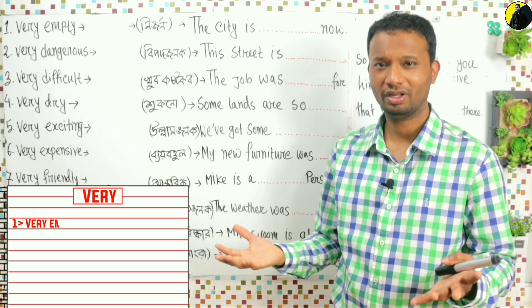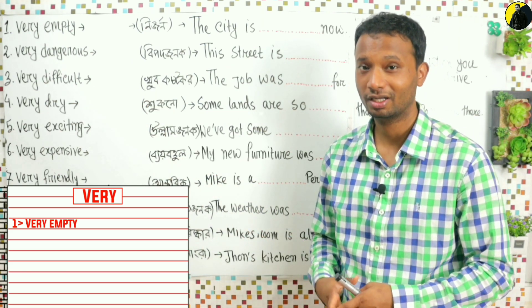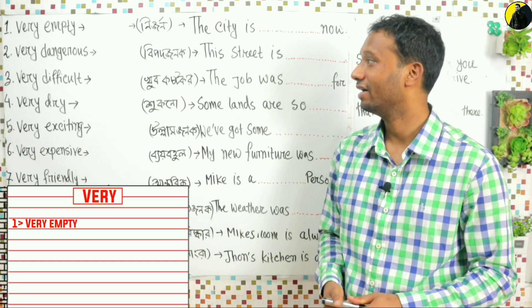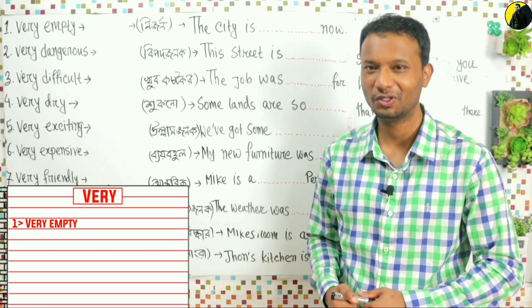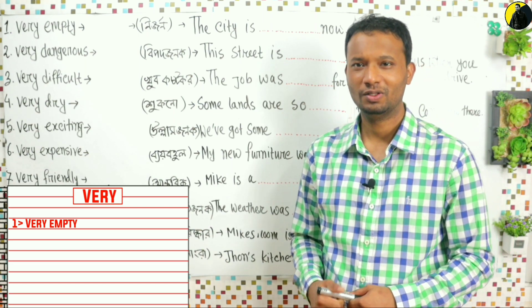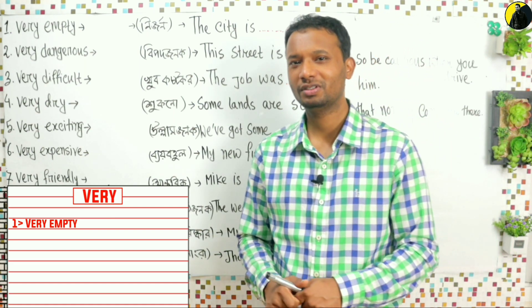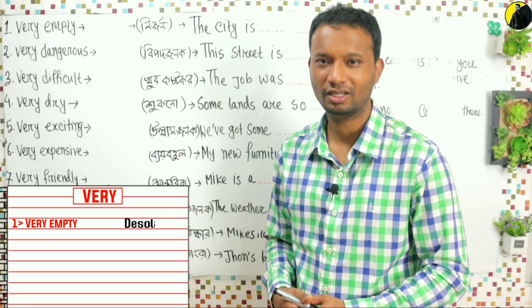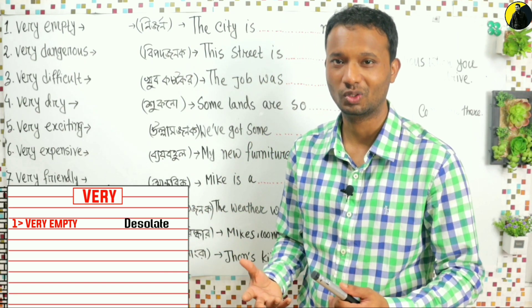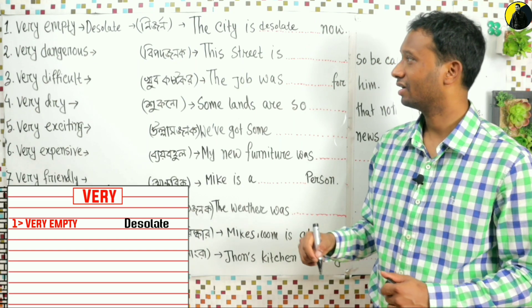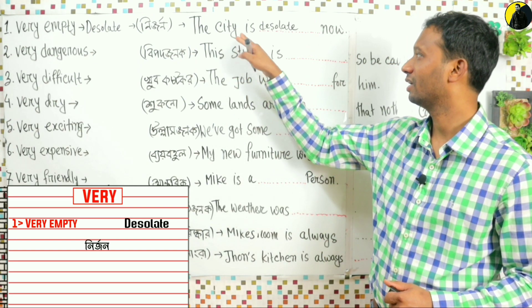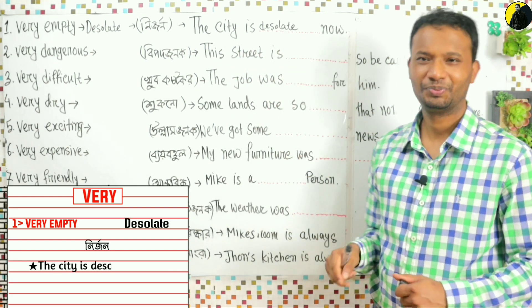Very empty. The advanced synonym for 'very empty' is: desolate. Repeat after me: desolate. So, very empty — its advanced synonym is 'desolate', meaning barren or empty. For example: 'The city is desolate now.'